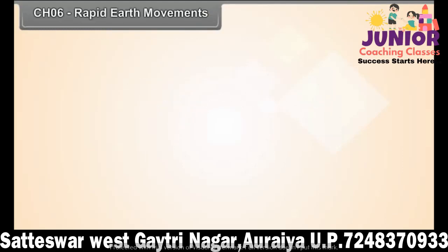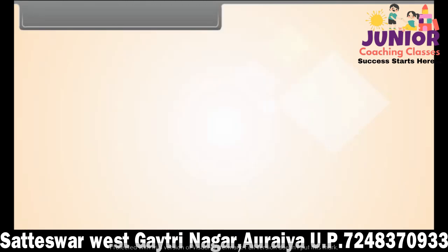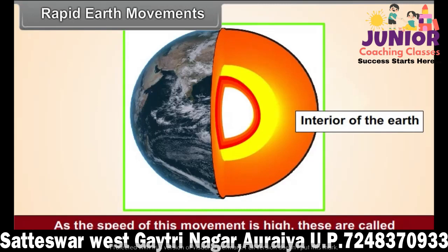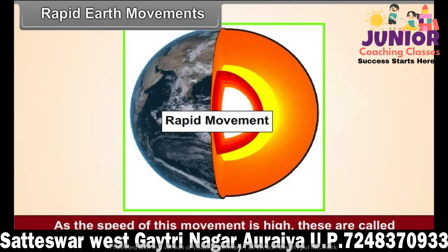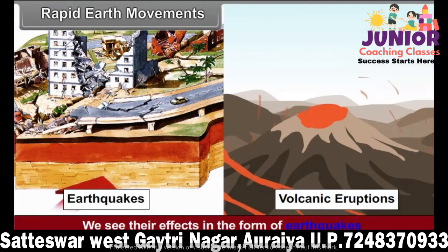Chapter 6: Rapid Earth Movements. In this chapter, we will study the rapid earth movements caused by internal processes. At times, there is a large scale and sudden release of energy in the interior of the earth. This gives rise to rapid earth movements. As the speed of these movements is high, they are called rapid movements. These movements are destructive and take place in a vertical, radial direction. They affect restricted areas, and we see their effects in the form of earthquakes and volcanic eruptions.